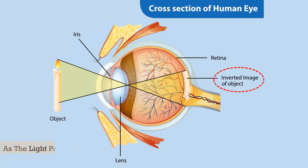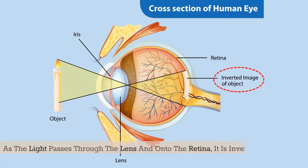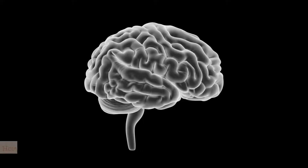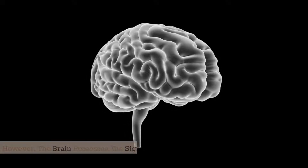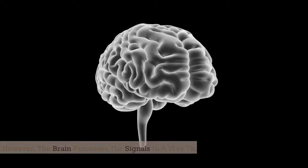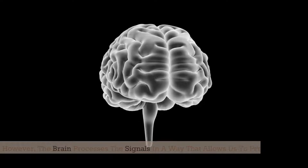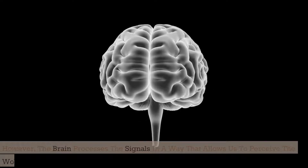As the light passes through the lens and onto the retina, it is inverted or turned upside down. However, the brain processes the signals in a way that allows us to perceive the world as right-side-up.